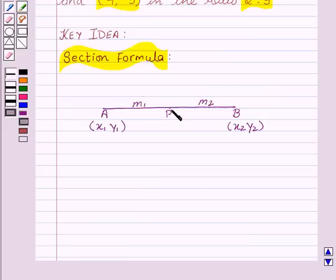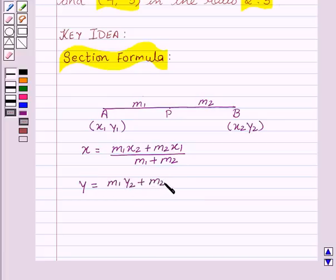Then coordinates of the point P are given by: x = (m₁x₂ + m₂x₁)/(m₁ + m₂) and y = (m₁y₂ + m₂y₁)/(m₁ + m₂). So x and y are the coordinates of the point P which divides the line segment AB in the ratio m₁:m₂.